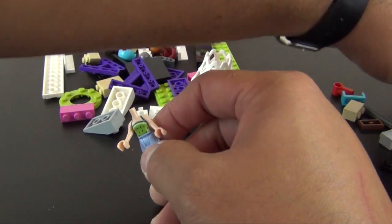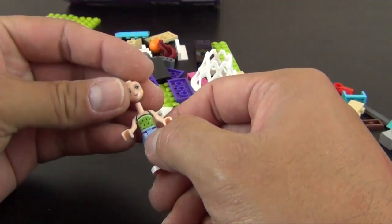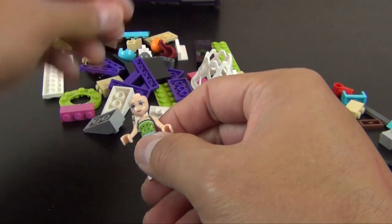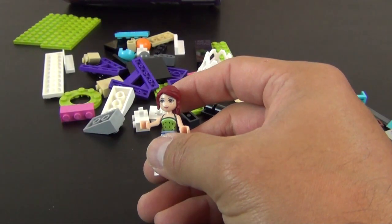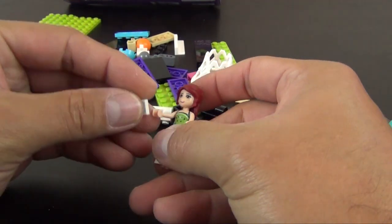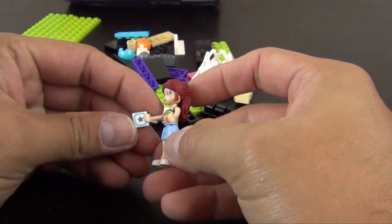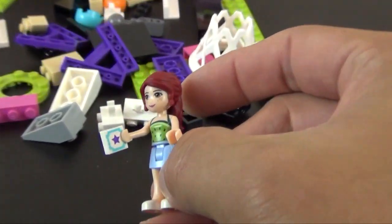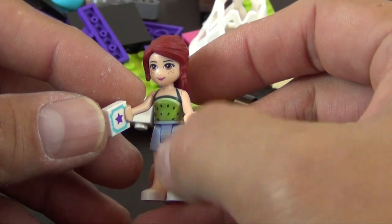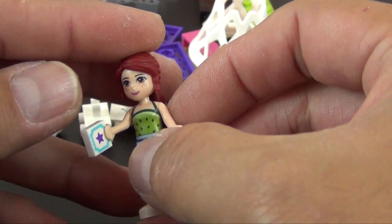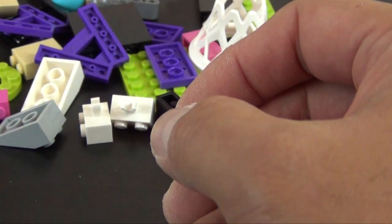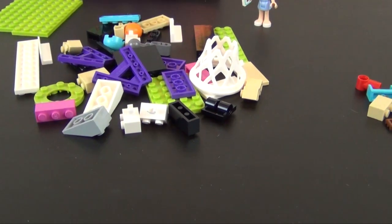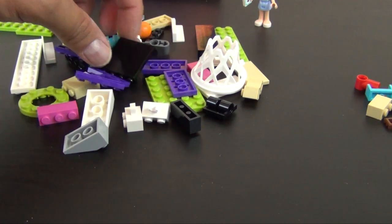We have basic leg, torso, head, hair, and she's going to be holding a ticket. The ticket is the entry fee to be able to play any of the games. So that's Mia. Yeah, that's Mia, just making sure. I get them confused sometimes.